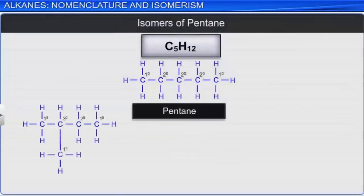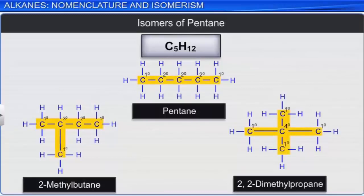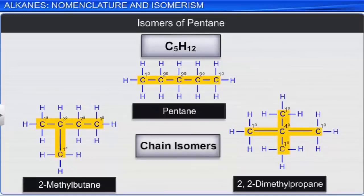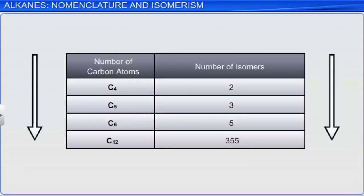In pentane, we get three possible structures: one, a continuous chain with secondary carbon atoms; another with one tertiary carbon atom; and the third with neo or quaternary carbon atoms. Here, the structural isomers differ in the carbon chain structure, and hence are called chain isomers. The table gives the number of isomers present for a given molecular formula. Butane has two isomers and pentane has three. Similarly, as the number of carbon atoms goes on increasing, the number of structural isomers goes on increasing.